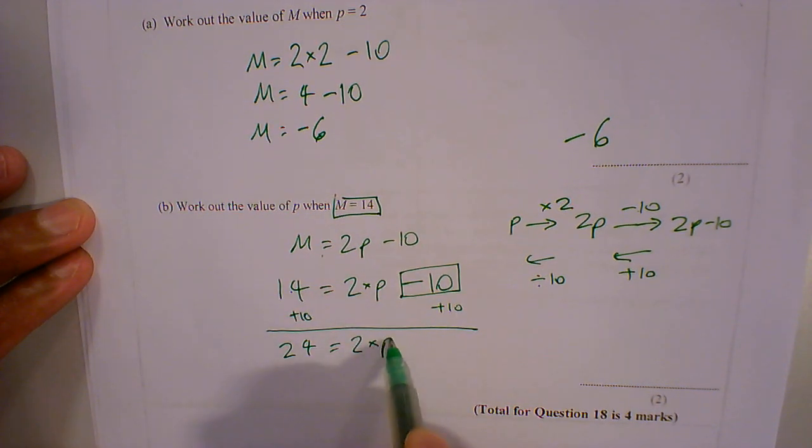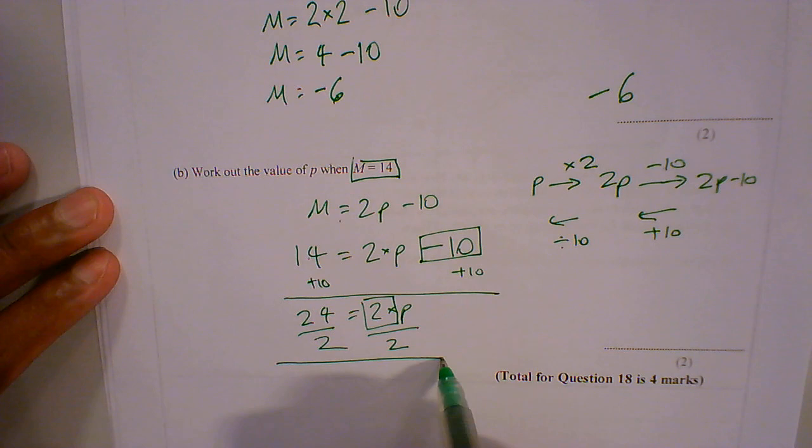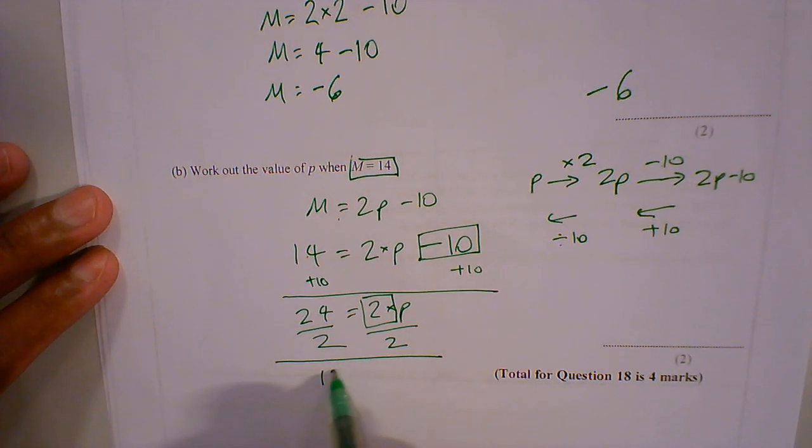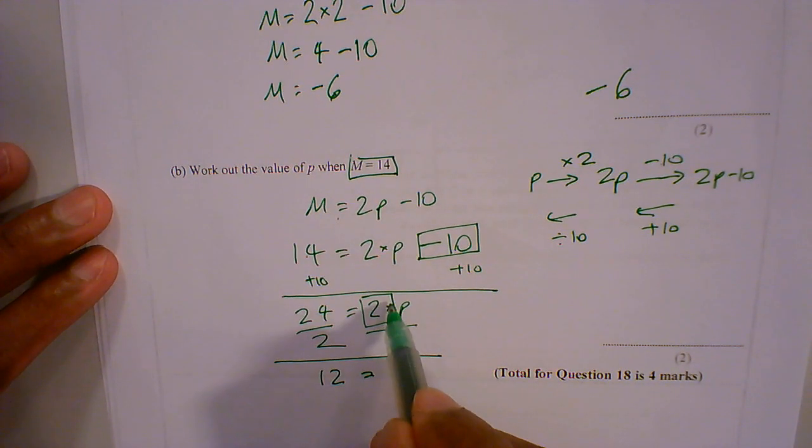2 times p, opposite of timesing, we want to remove the 2 is divide, so we divide by 2. Divide by 2. 24 divided by 2 is 12, because the 2's cancel out.